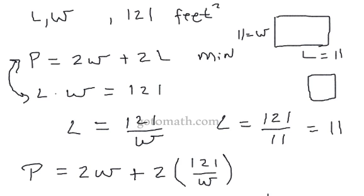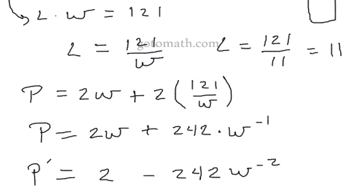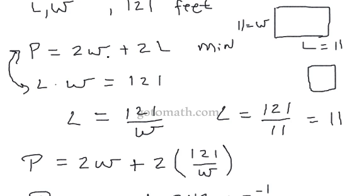And of course I mentioned symmetry in the last problem. By just looking at our equations, we should be able to pretty much tell that both of our values, our length and our width, are going to be equal.